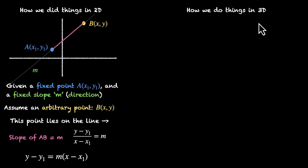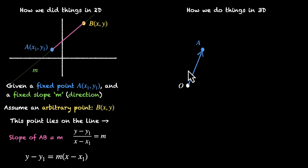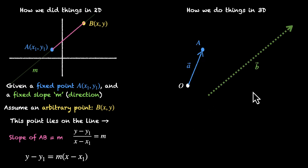Now let's see what we do in 3D. We have our point of reference origin and a fixed point A — this is the position vector, A vector. Our line passes through this point A and is parallel to a different vector, let's call it B vector. So we want to find a line passing through A and parallel to B.